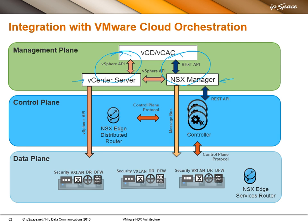vCenter talks to individual hypervisors. NSX manager talks through the controller API to the controller cluster, and the controller cluster talks to user world agents on the ESX hosts. Then you have the distributed routers, which on one hand are running routing protocols with the outside world and using control plane protocols with the controller. And you have the edge services routers, which are totally independent because they are VMs that just happen to be connected to a few internal and external segments.